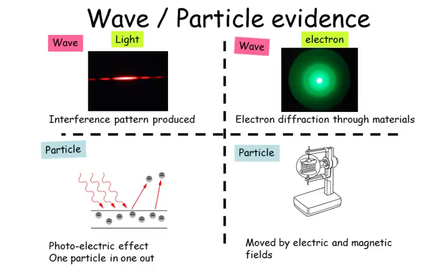Likewise with the electron, we've seen that you can have electron diffraction and we can get these rings being produced. That only occurs with waves, but electrons can be moved by electric and magnetic fields, and those are properties only observed with particles.